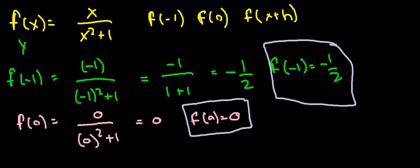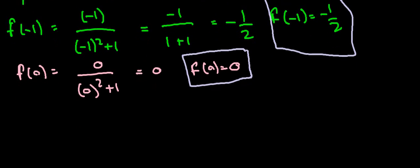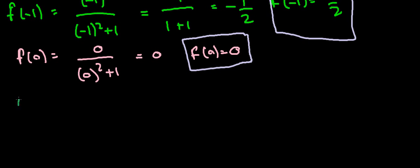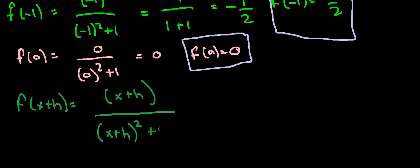And our final one, f of x plus h. So we have f of x plus h is equal to, substitute x plus h in for x, x plus h over x plus h squared plus 1. So anywhere there is an x, we just plug in our function value.